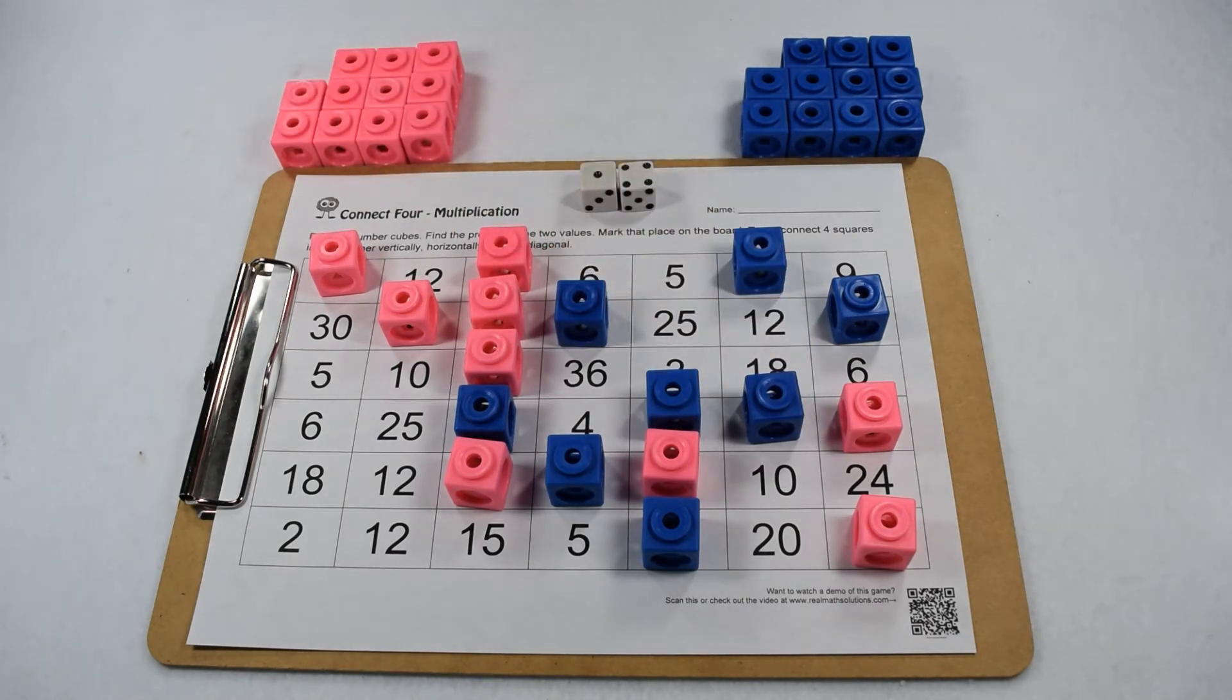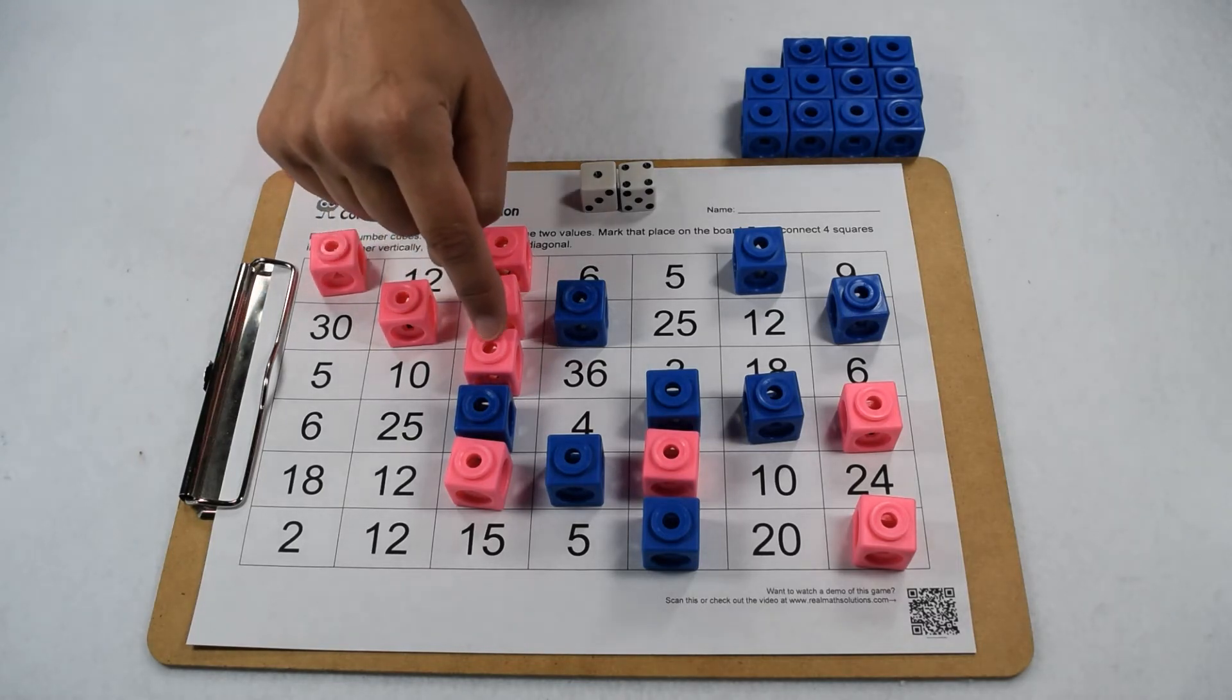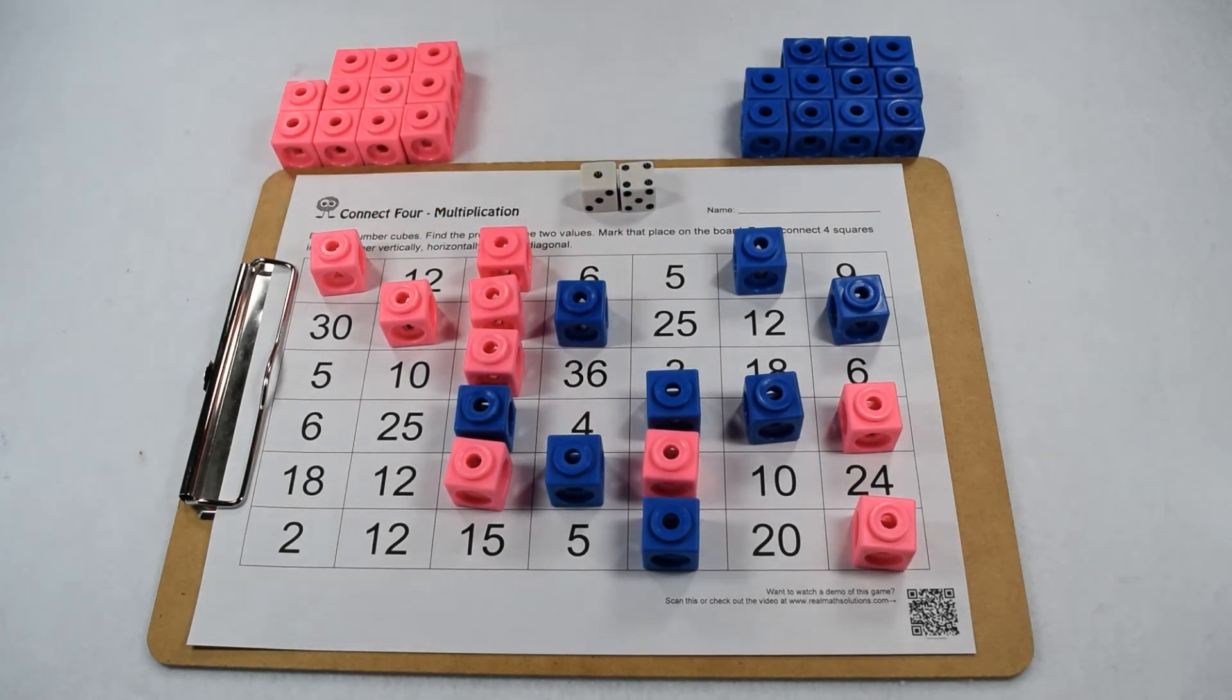The other thing we need to work on is blocking your opponent from getting four in a row. We can see we're at a critical point in this game. Our pink player has one, two, three in a row and could get a fourth one if they roll that four.